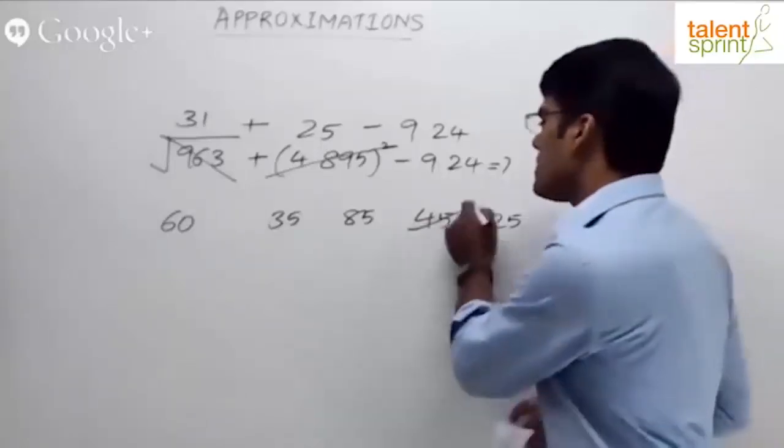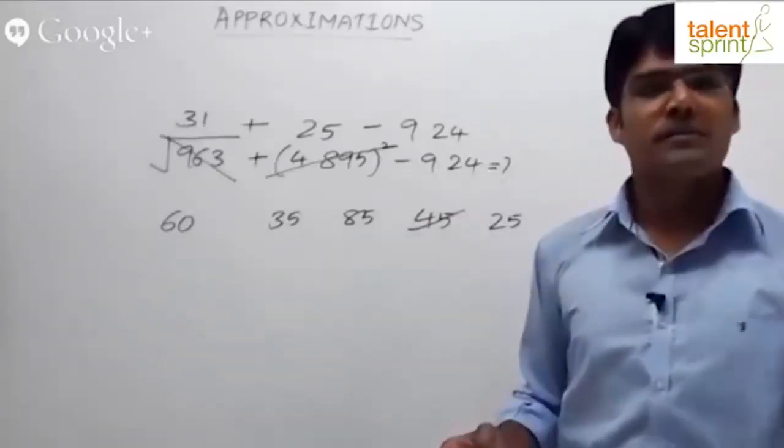Which is the closest one? Fourth option, 45. So the answer here should be fourth option, 45.